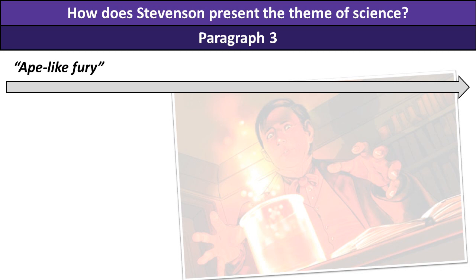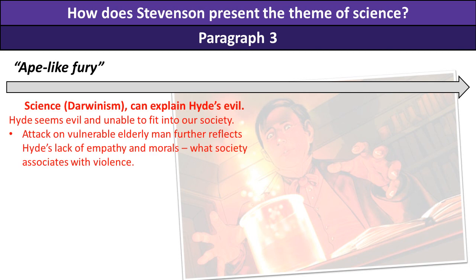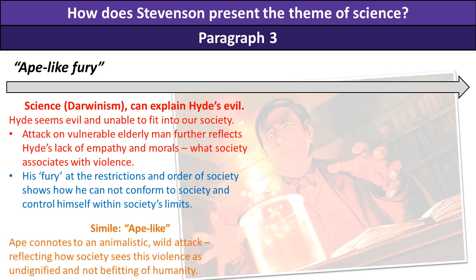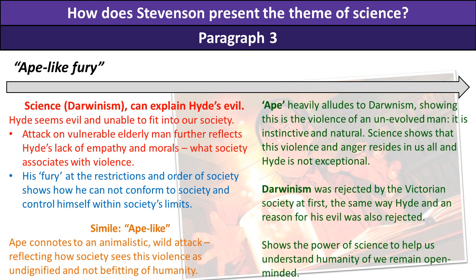Any essay on science would not be complete without discussing Darwinism. I've used the quote 'ape-like fury'. Darwinism can explain Hyde's evil, thereby showing the power of science to solve the mysteries and riddles of our life. Hyde seems evil and unable to fit into society — he attacks an elderly man, showing his lack of empathy and morals, furious at the restrictions of society and his inability to conform. We dismiss him as animalistic and wild. However, science can explain all of this: the fact that he's ape-like heavily alludes to Darwinism, showing this is the violence of an unevolved man — instinctive and natural. Science shows us that his violence and anger resides in us all, and Hyde is not exceptional. Darwinism was also rejected by Victorian society at first, just as Hyde was, and therefore the reason for his evil was also rejected. This shows the power of science to help us understand humanity if we remain open-minded and tolerant to new ideas.